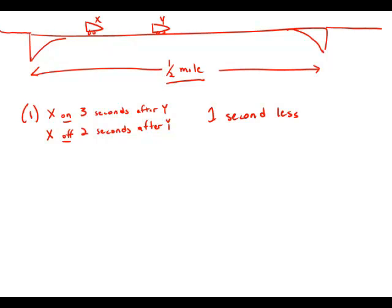So if we knew how long car Y spent on the bridge, we could find out how long car X spent on the bridge. Unfortunately, that's the only information we have at the moment with statement number one. So by itself, statement number one is insufficient.